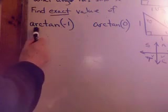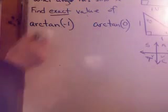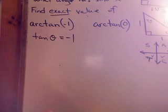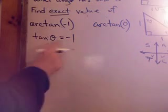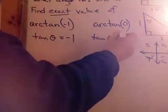Find the exact value of arc tan negative 1, or arc tan 0. So, tangent of some θ equals negative 1. What angle is the tangent of negative 1? Or this one. Tangent θ equals 0.